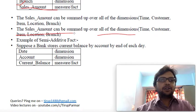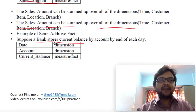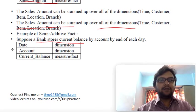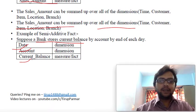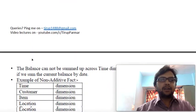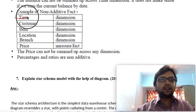For the semi-additive example: a bank stores the current balance by account at the end of each day. The information required includes date, account, and current balance. Here, we are not adding all dimensions — only a few dimensions are being added — and hence it is called semi-additive.